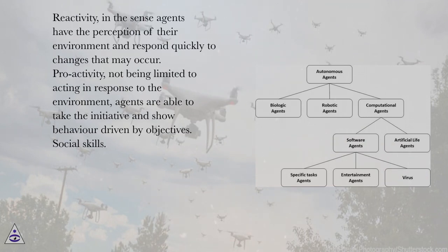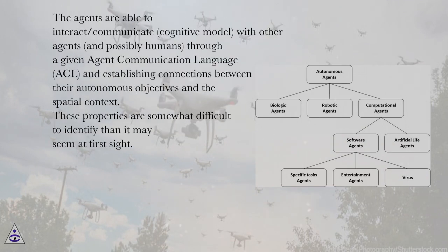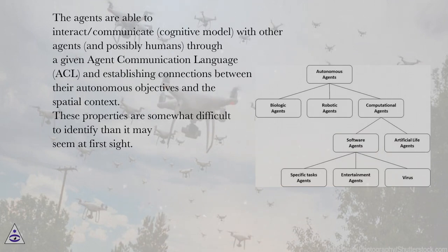Social skills: the agents are able to interact and communicate, using a cognitive model, with other agents and possibly humans, through a given agent communication language (ACL), and establishing connections between their autonomous objectives in the spatial context.